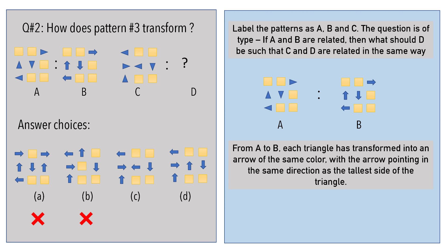Every triangle in pattern A is replaced with an arrow sign in pattern B. Further, the arrow points in the same direction as the tallest side of the triangle.